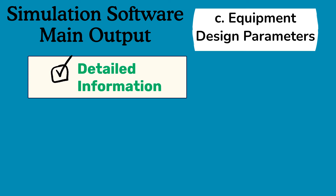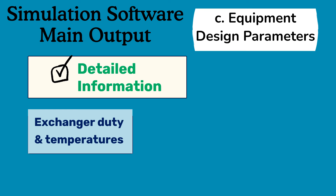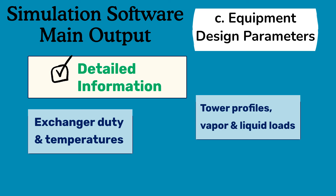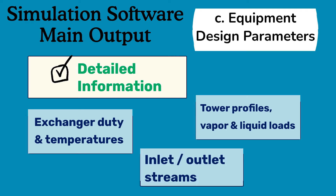The equipment design parameters are another essential output of process simulation software, providing detailed information on the design, operation, and performance of various equipment within the plant. For example, these can be exchanger duty and inlet and outlet temperatures needed for thermal design, tower tray profiles needed for tower sizing, and inlet and outlet streams needed for pipe sizing, pump, and control valve hydraulics.